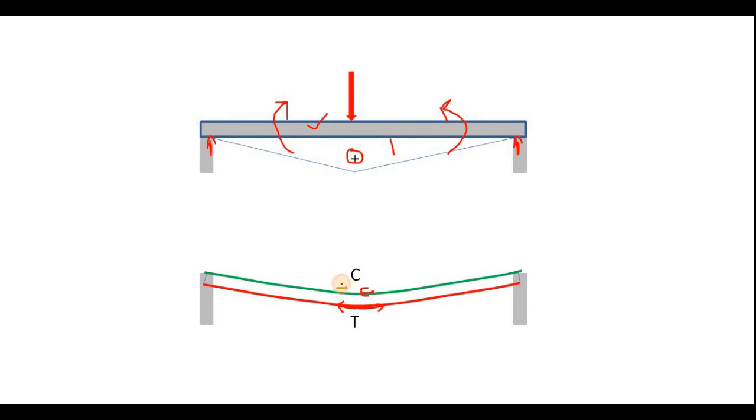So for this type of loading and this type of support, you can say that the topmost fiber of your structure is under compression and bottommost fiber of your structure is under tension. Now it is clear. You have applied load and the girder has been deflected and you have identified the tension fiber and compression fiber.